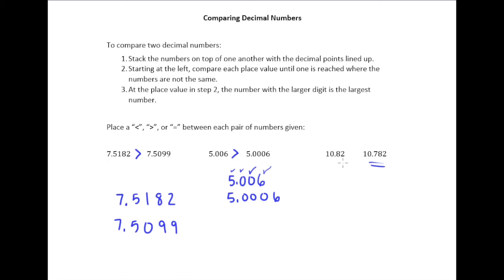Another way to think of the reason that this number is larger is since this ends in the hundredths place, the fraction that goes with this decimal would be 82 over 100, right? Where this one would be 782 over 1,000.